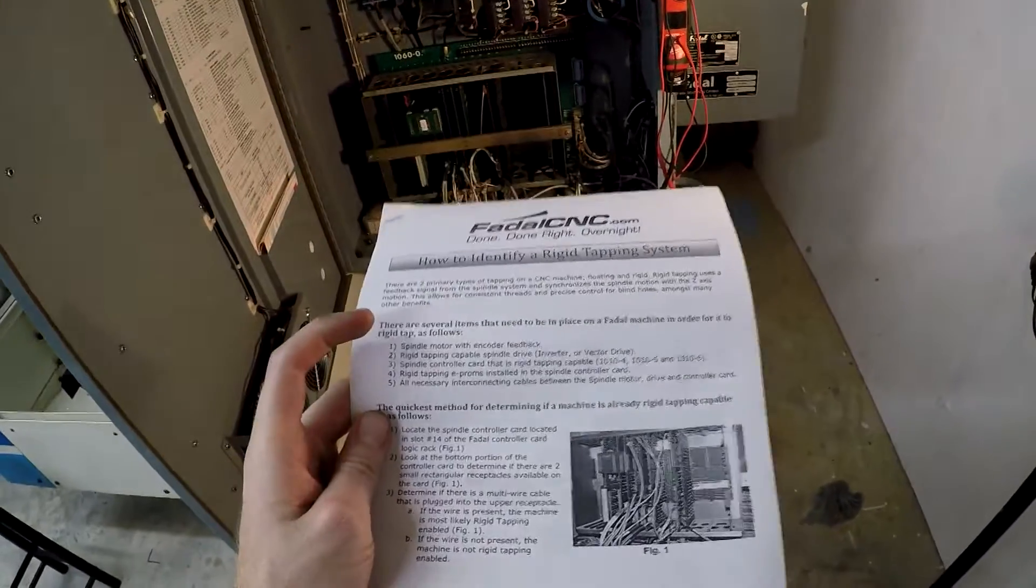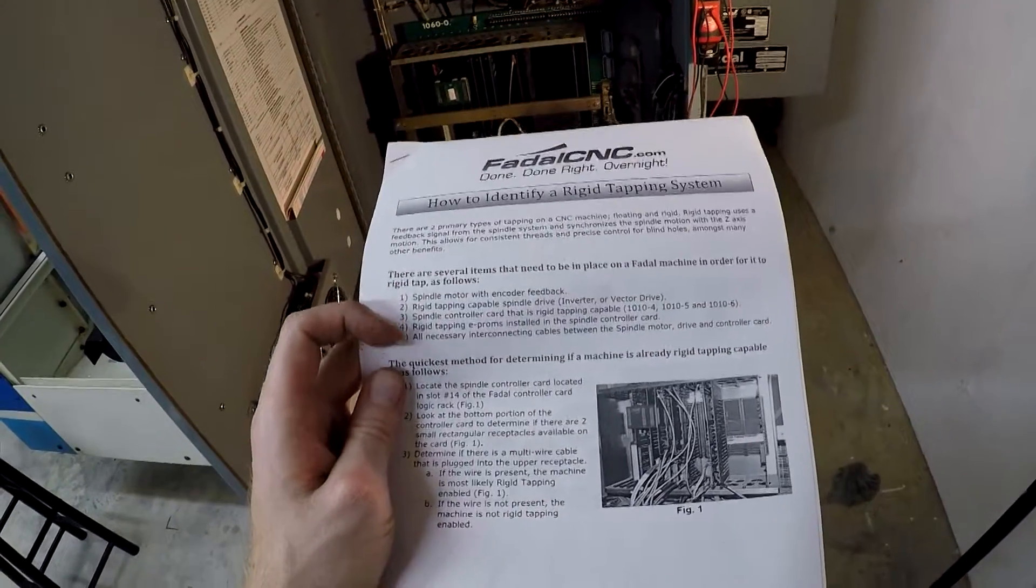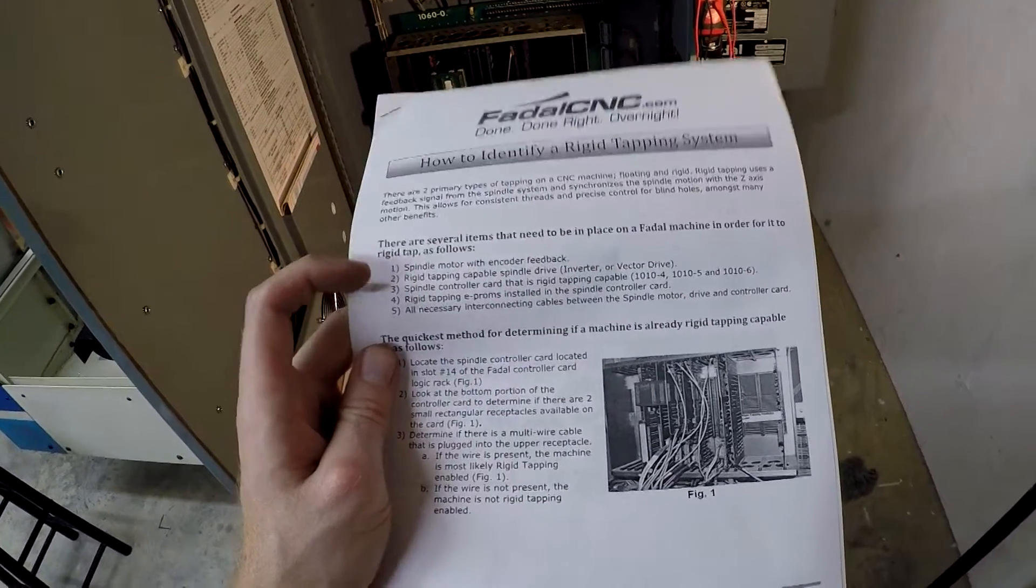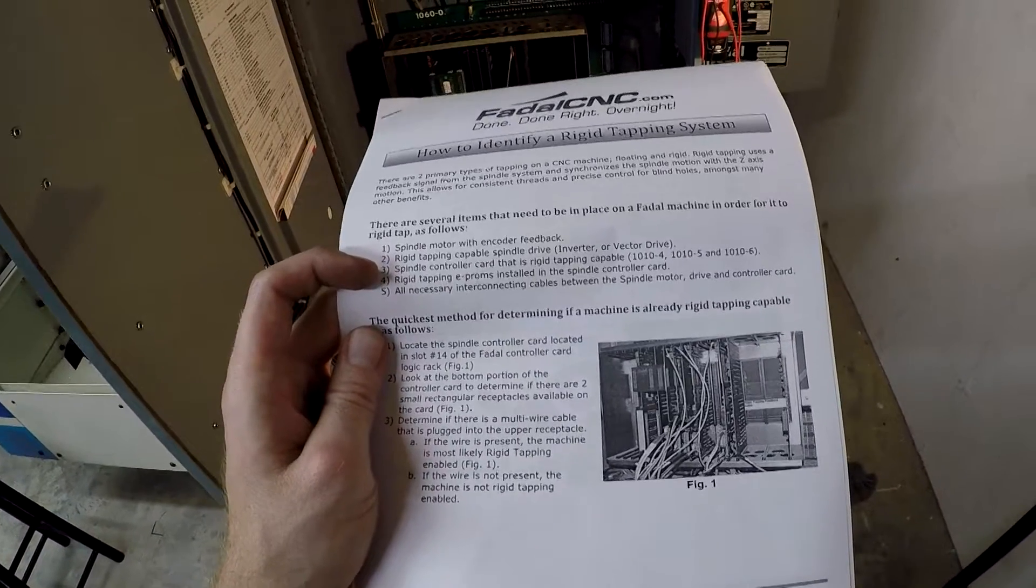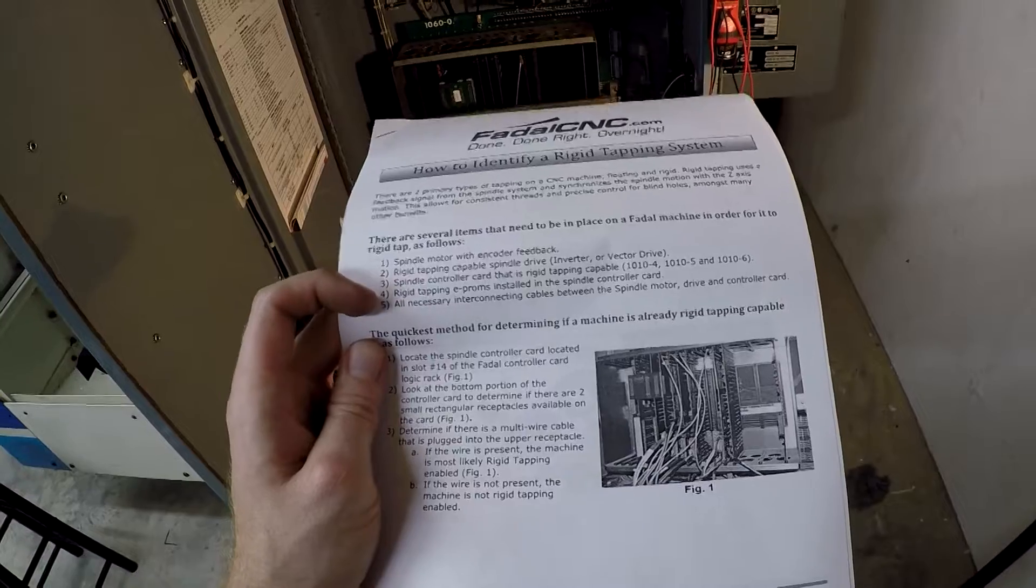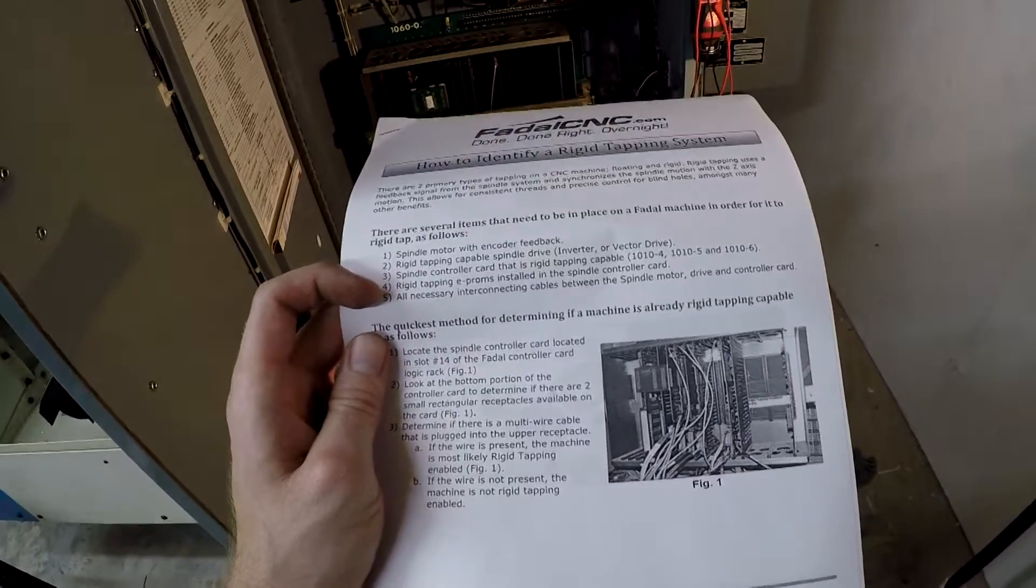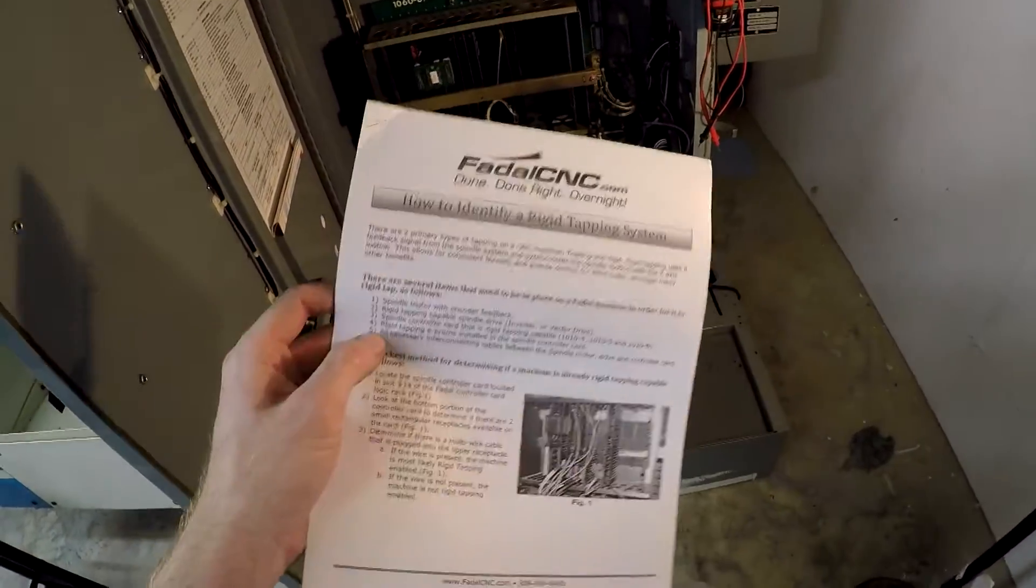So it goes through several of the things that you need. The spindle motor with encoder feedback. You need a spindle drive that can do it. You need a card that can do it, the E-proms installed on the card, and then all the cables in between them.